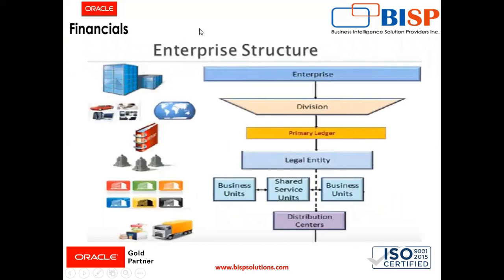This is how our enterprise structure looks. First comes the enterprise, then divisions, then the primary ledger, then the legal entities, and then business units and distribution centers. To understand more about the enterprise structure, you can refer to our video on enterprise structure in Oracle Fusion financials.